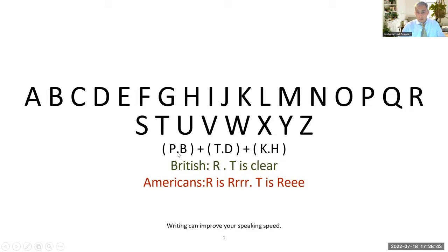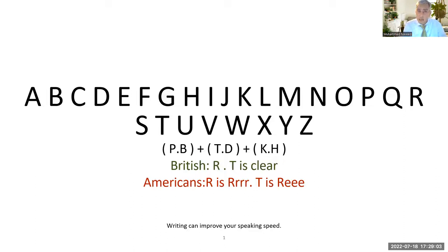There are three sets of brackets: P and B, T and D, and K and H. In some areas people pronounce H one way; in others differently. For example, if you say 'hello,' the H is supposed to be pronounced clearly — you can't say 'hello' with a soft H. You must say 'hello.' So H needs to be clearly and properly pronounced.